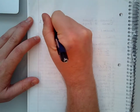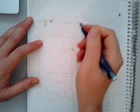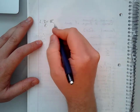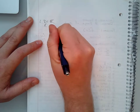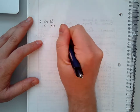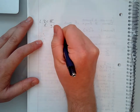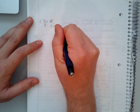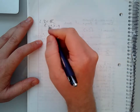Number one: for the domain, it is a theoretical equation, so it is all real numbers. For the range, because 'a' is positive, we know it's y is greater than the asymptote, which is negative four.